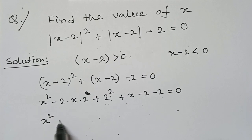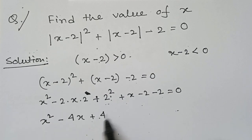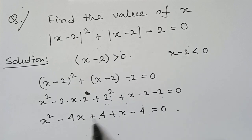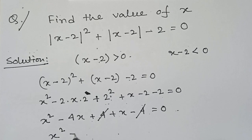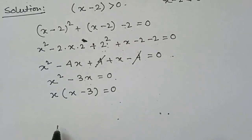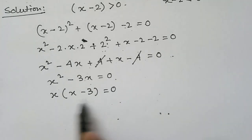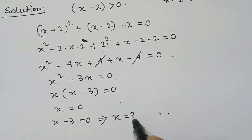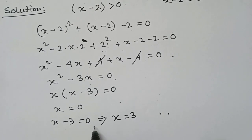So this will be x squared minus 4x plus 4 plus x minus 4 equals 0. Now this 4 and this minus 4 will cancel out, so the expression becomes x squared minus 3x equals 0. We can take x common, giving x times (x minus 3) equals 0. There are two solutions: x equals 0 and x minus 3 equals 0, which implies x equals 3.